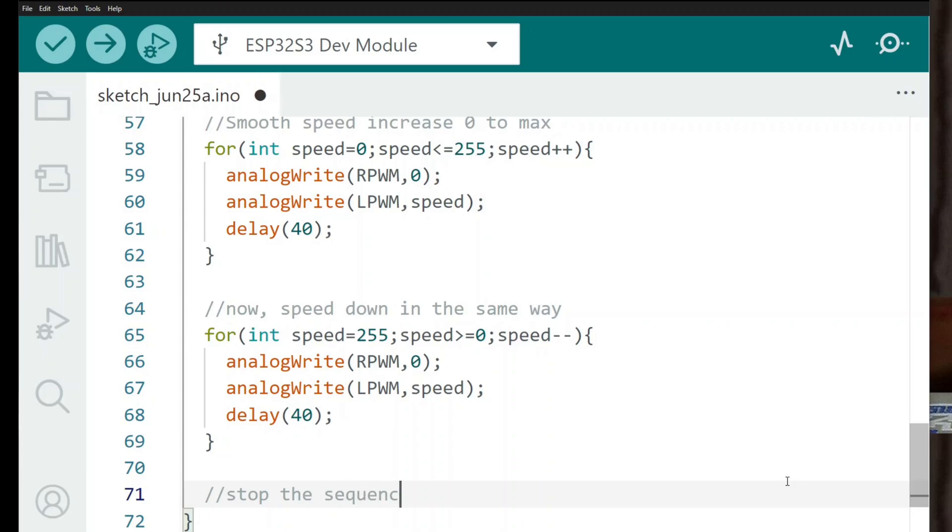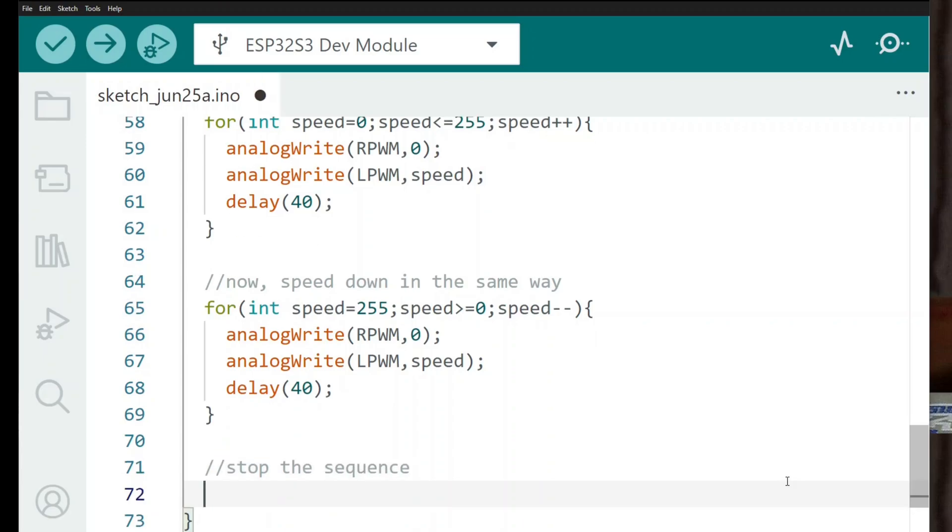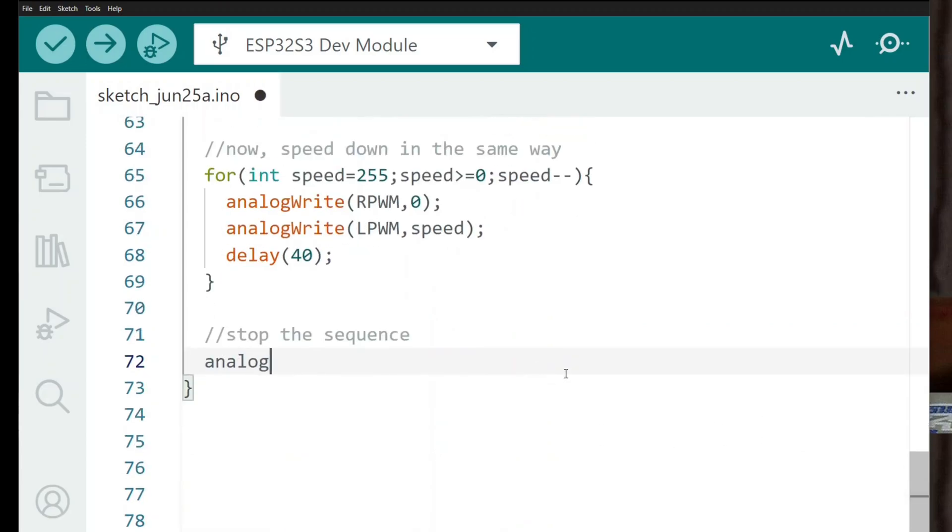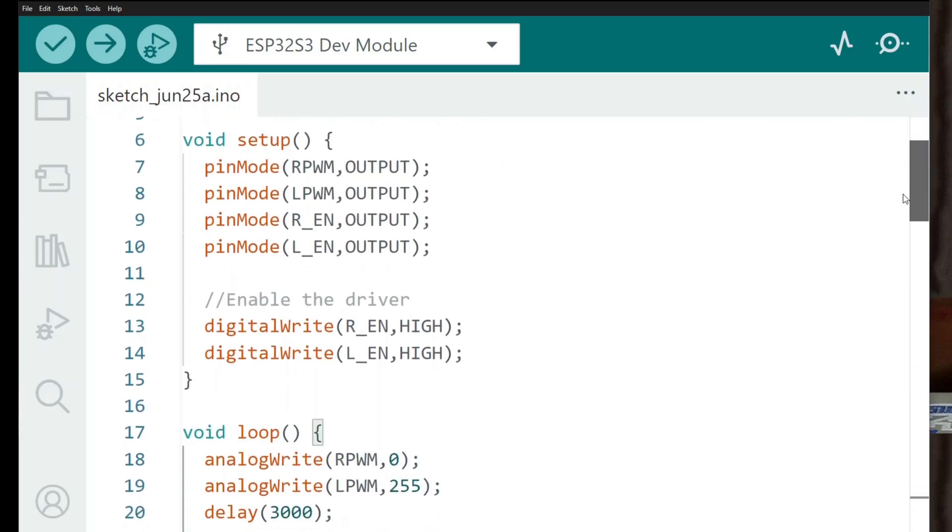Finally, we bring the motor to a complete stop and pause for 3 seconds before ending the sequence. You can find this code link in the description below.